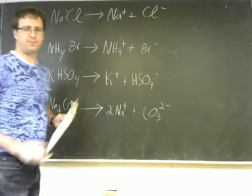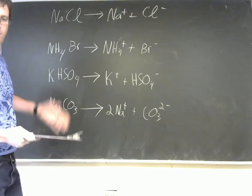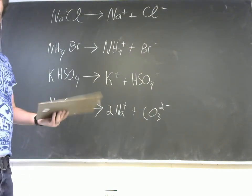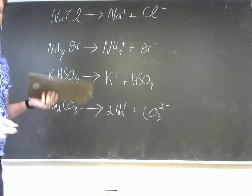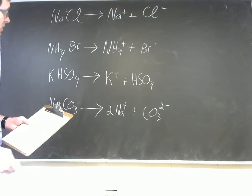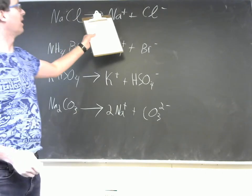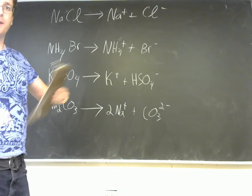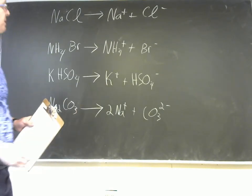So each of these, we want to be able to determine whether they will make the solution acidic or basic or neutral when it dissolves in water. To do that, we're going to look at the cation and the anion independently, and determine if it has any acid-base property.